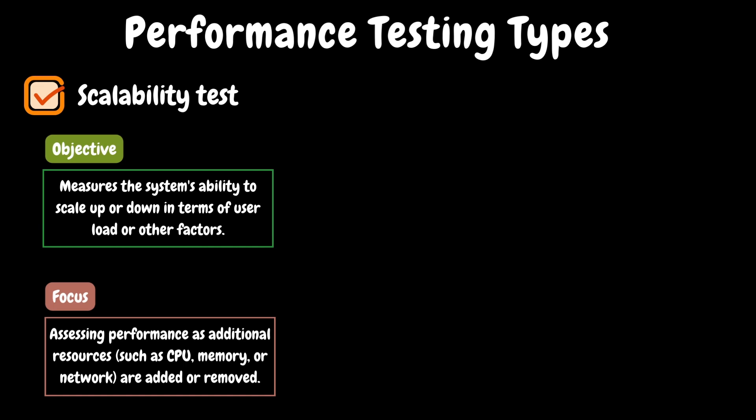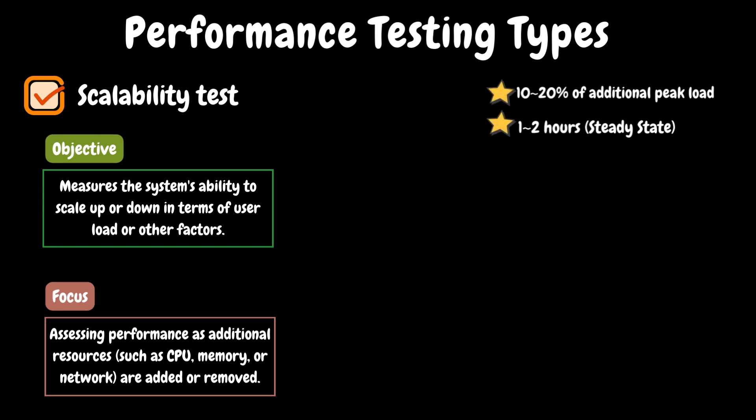The next one on our list is the scalability test. Every application typically has future expectations — for instance, there might be an annual expectation of a 10% increase in user load. The application teams would like to understand if the existing capacity is able to handle future projections, or sometimes they will add additional capacity to assess those projections. In the test execution, we need to focus on application performance while adding or removing capacity. For example, if the application has a 10% increase in user load every year, then the scalability test will be scheduled for the next five years' volumes like 110%, 120%, 130%, 140%, and 150%. This test will also be scheduled for one to two hours of steady state duration, with ramp up and ramp down determined based on the application traffic patterns.